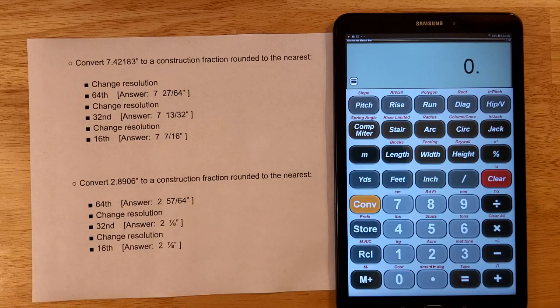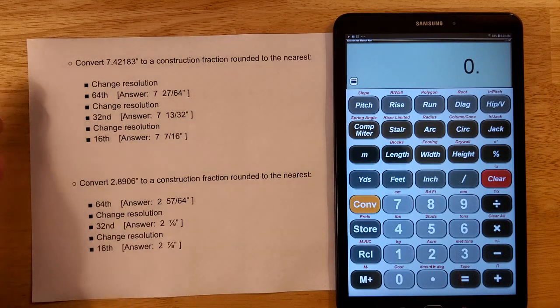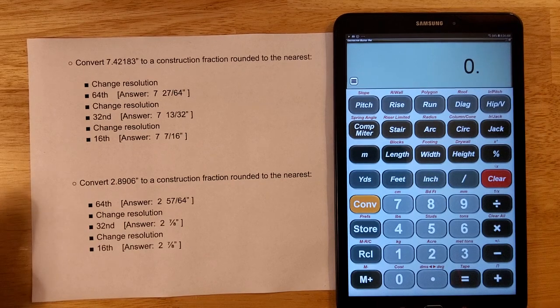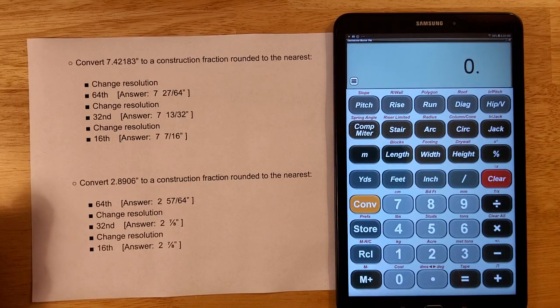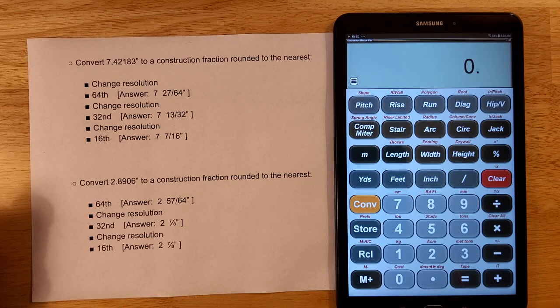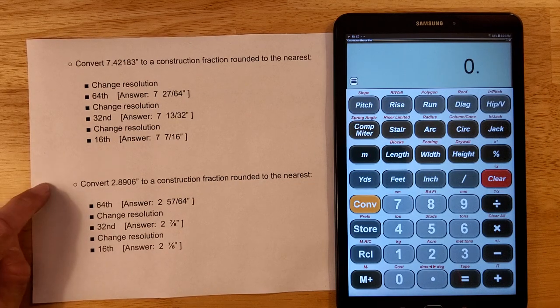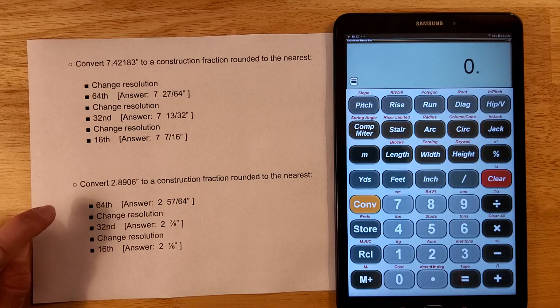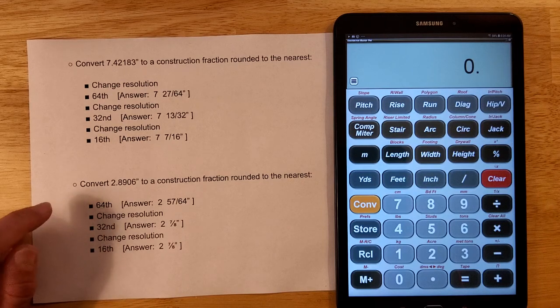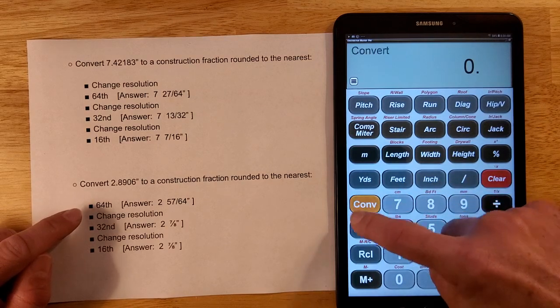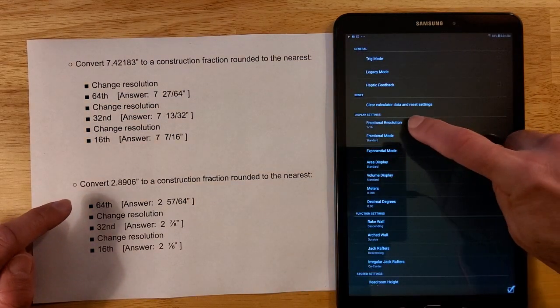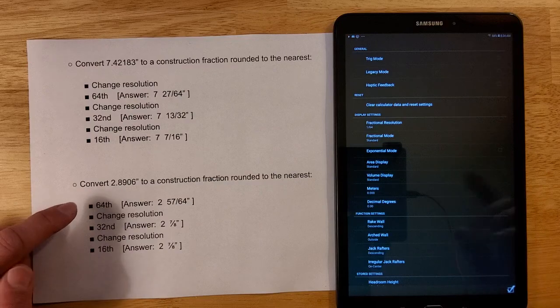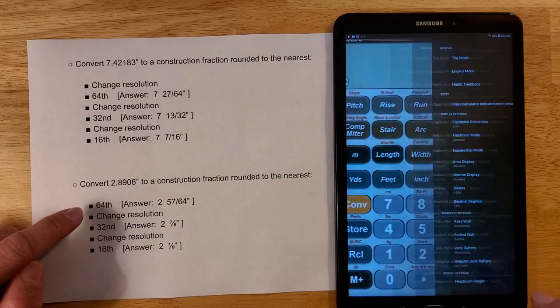Because sometimes people get confused when they ask the calculator to give it to them to the nearest thirty seconds, but it comes out maybe as sixteenths or eighths. Remember that all that means is that the thirty-second number that it came up with was an even number and so it reduced the fraction. So let me just show you an example of that. Just so you know not to worry about that when you see it. Make sure that your fraction resolution is set correctly. Because that could be the problem. But if you're confident that your fraction resolution is set correctly then you're okay with, if you ask it to give you the nearest sixty-fourths and it gives you eighths or something, that's not necessarily wrong.